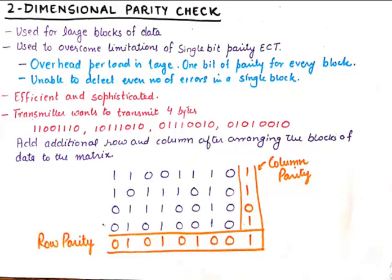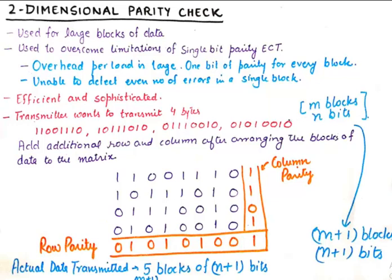The same thing happens with the columns — I will count the number of 1s; if the number of 1s are even then I will put a 0, if the number of 1s are odd then I will put a 1. And this final bit here is going to be super crucial because it is going to count the number of 1s in the column containing the parities of the rows. So if you look at this particular column, it consists of the parity bits of the rows — it had 3 ones, so I added one more 1 here.